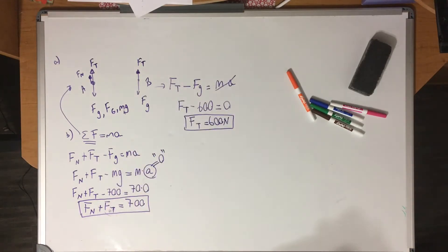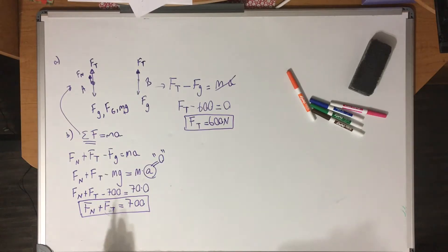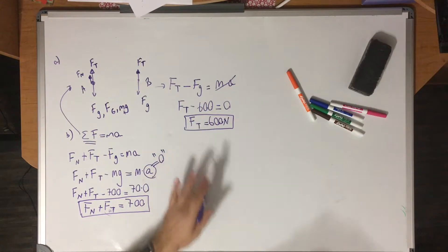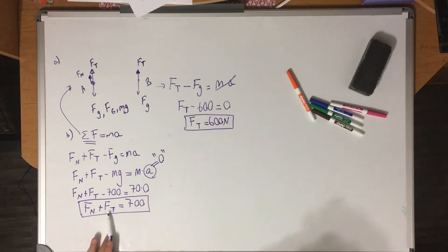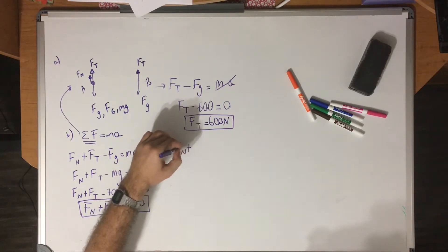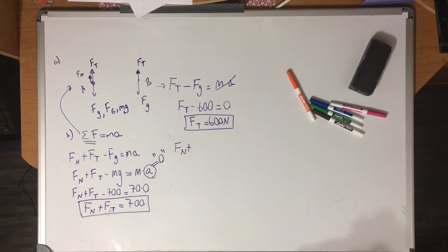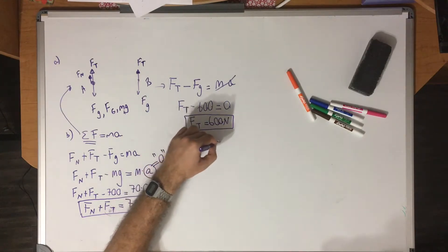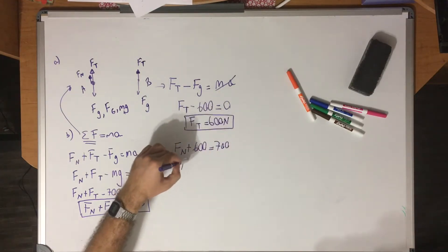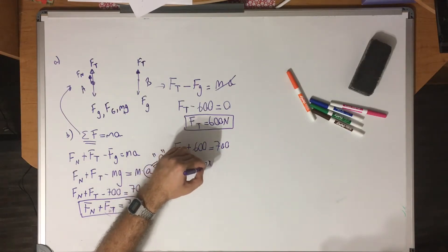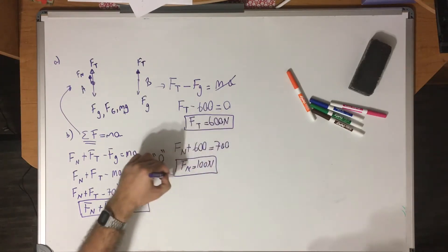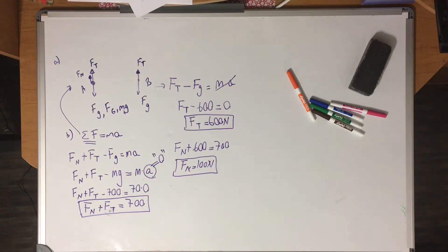We found the tension from the other student. Always look for what you know and what you can do with the given information. Now I have my tension, and normal force plus tension equals 700. Substituting FT with 600: FN plus 600 equals 700. So the normal force in this first case is 100 Newtons.